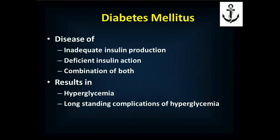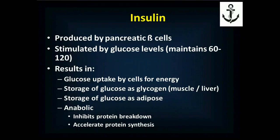Diabetes mellitus, or sugar diabetes, is a disease of either not enough insulin, no insulin production, or insulin that doesn't work properly on its target tissues — or some combination. Overall it results in a high blood sugar and long-standing complications: heart disease, kidney disease, disease of the eyes, and disease of the nervous system. Insulin is produced by your pancreas by the beta cells and maintains a blood sugar in the 60 to 120 range. When released, it results in glucose uptake by cells — some take up glucose for energy.